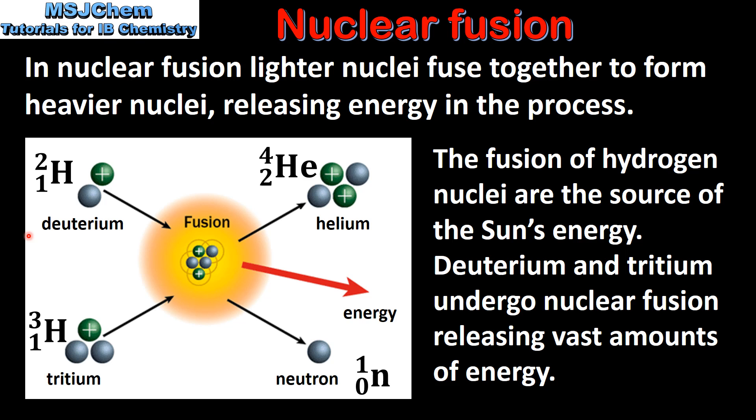So here we can see the nuclear fusion reaction that takes place in the sun. We have two isotopes of hydrogen which are deuterium and tritium. Under very high temperatures they undergo nuclear fusion, producing helium, a neutron, and energy.